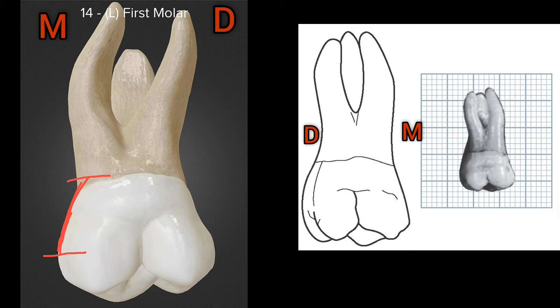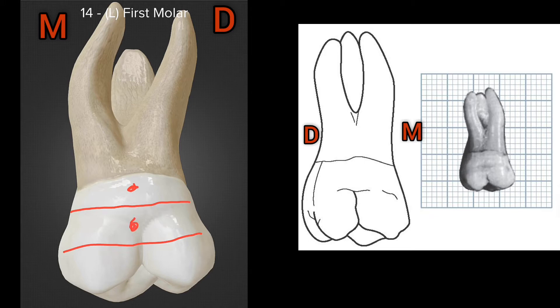The height of contour on the mesial side is at the junction of the middle and occlusal thirds. If we divide the crown into three equal parts — cervical, middle, and occlusal thirds — the height of contour on the mesial side lies at the junction of the occlusal and middle thirds. On the distal side, the outline is convex and the height of contour is at the middle third.